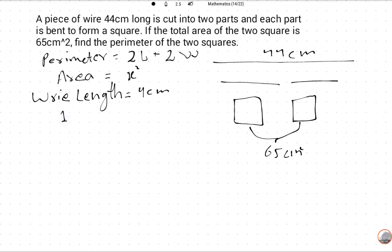First piece length. What is first piece length? We don't know, that's why we will suppose it x. And the second piece length, what will it be? Because total length is given 44, 44 minus x will be the second piece length.